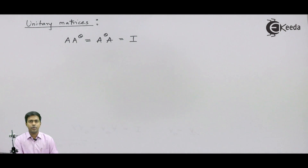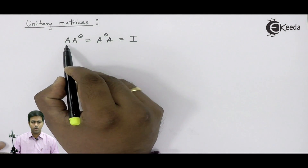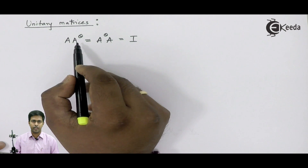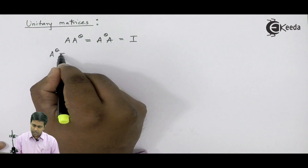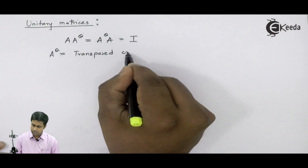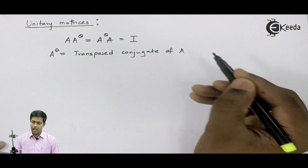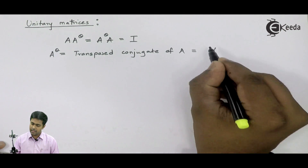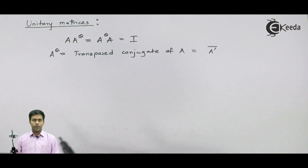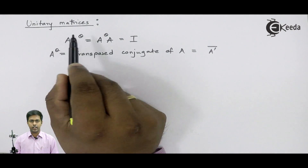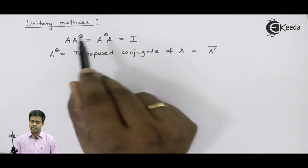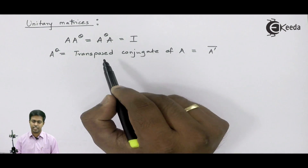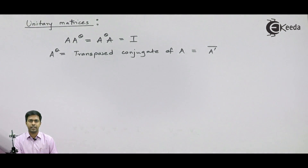In simple language, if a square matrix A is multiplied by its transpose conjugate — A-theta is the transpose conjugate of A, found by taking the transpose and then the conjugate — and the product equals the unit matrix, then A is called a unitary matrix.